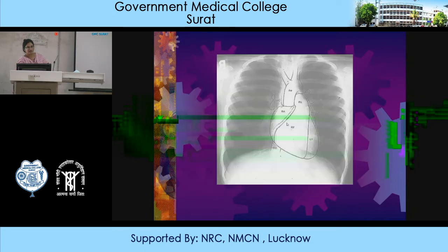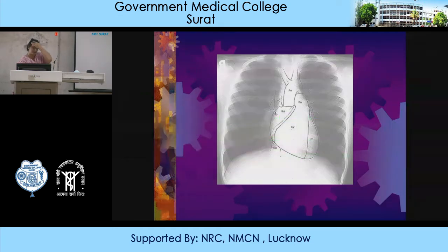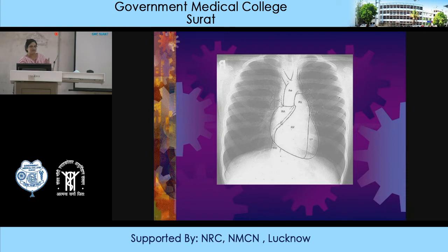On a chest X-ray, the right atrium predominantly forms the right border of the heart. The left ventricle forms the left border. The right ventricle is a triangular shaped structure situated anteriorly. The pulmonary artery arises from the right ventricle, and the SVC and IVC drain into the right atrium. The aorta arises from the left ventricle. The left atrial appendage projects on the left side.